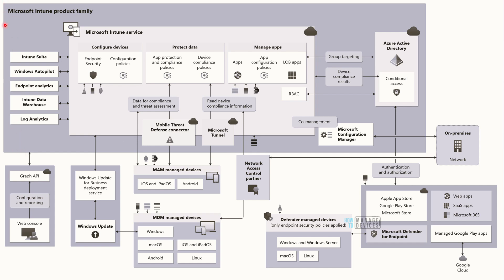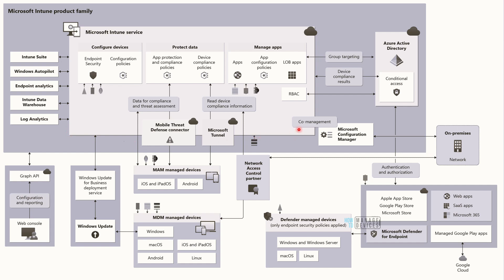Let's understand it from a high-level perspective. This particular box is called Microsoft Intune product family, and the biggest box inside this architecture diagram is Microsoft Intune service — that is the core of the Intune product family. Azure Active Directory is also in this box, maybe as an extended family along with conditional access. On the left side you can see Intune Suite with lots of new services. Windows Autopilot is there, Endpoint analytics, Intune data warehouse, and Log analytics. On the right side, Configuration Manager (SCCM) is also part of the Intune product family.